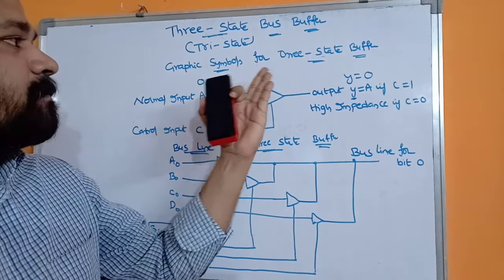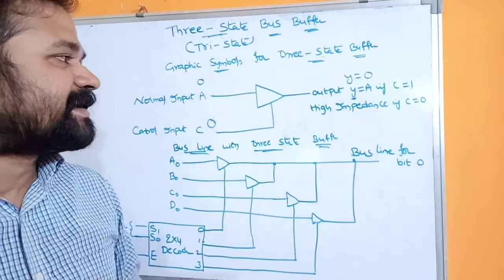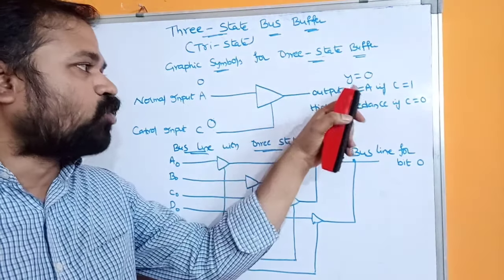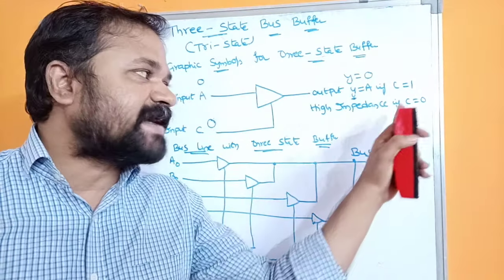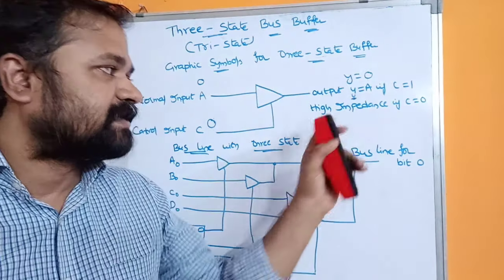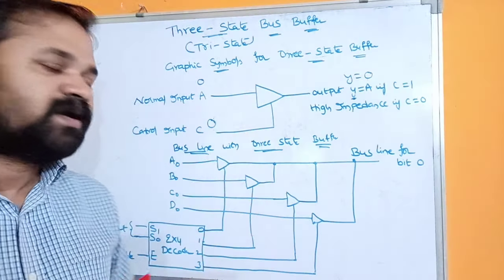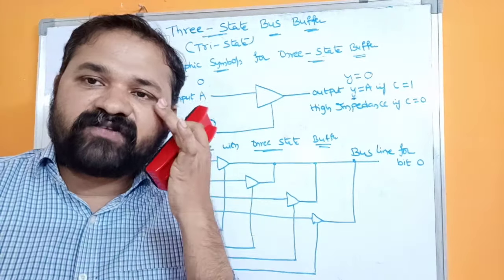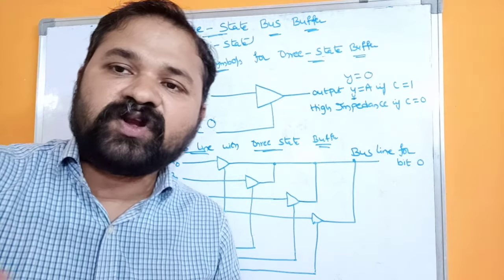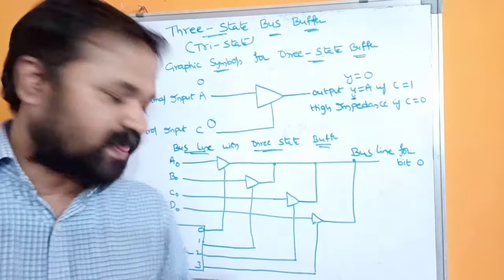A three-state buffer can also be known as a tri-state buffer. If the control input is 1, the output Y equals A. If the control input is 0, the output is high impedance. Now let's see how, with the help of a bus, we can transfer data from one register to another register — a bus is mainly useful for transferring data between registers.